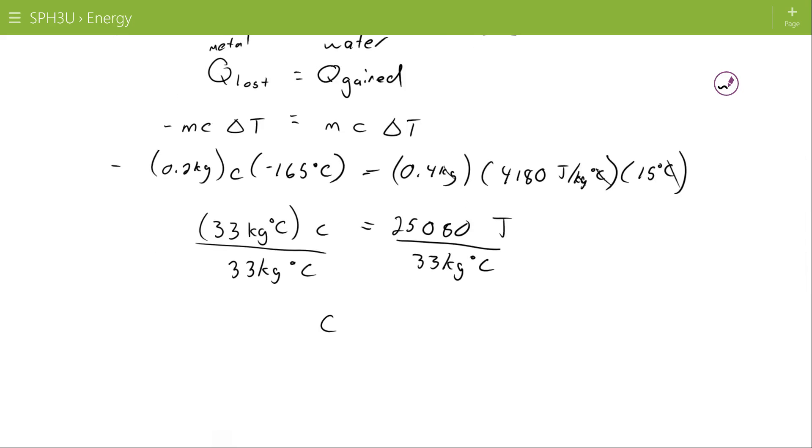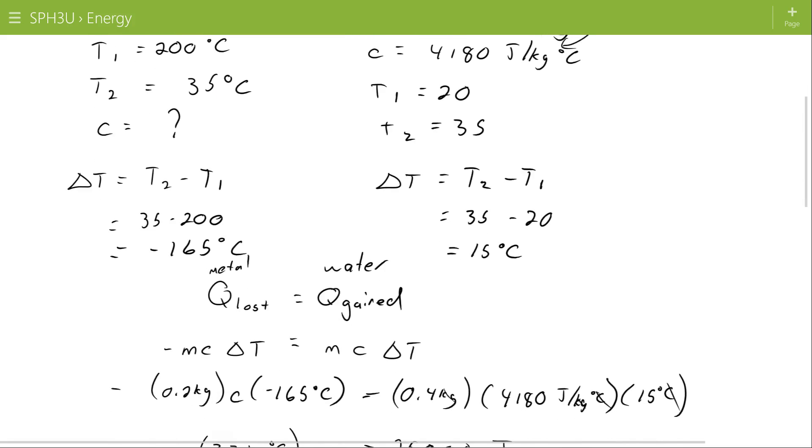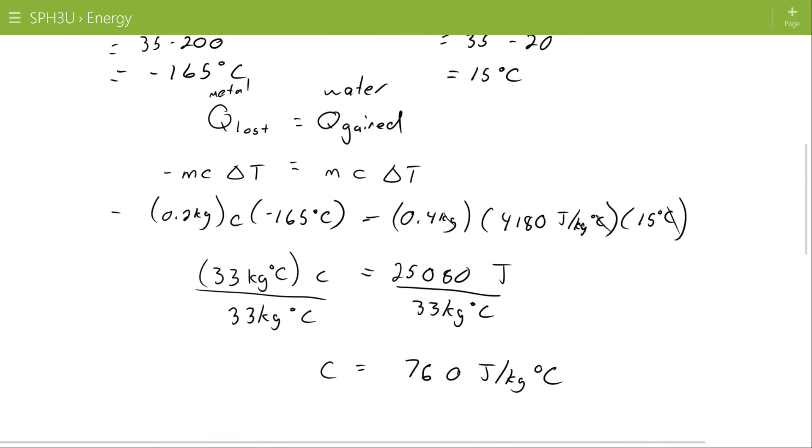And the specific heat capacity of my metal is 760 joules per kilogram degree C. So there it is. Instead of finding the equilibrium temperature, we didn't know the specific heat capacity, but we use the same formula and put the numbers in, and there it is.